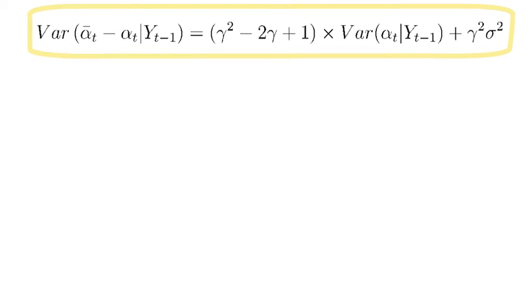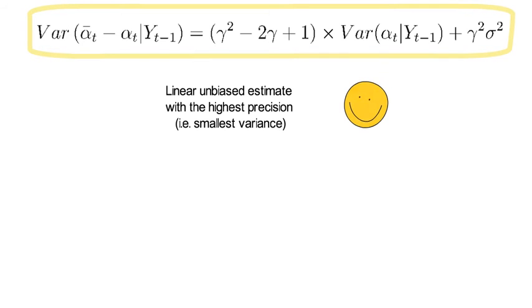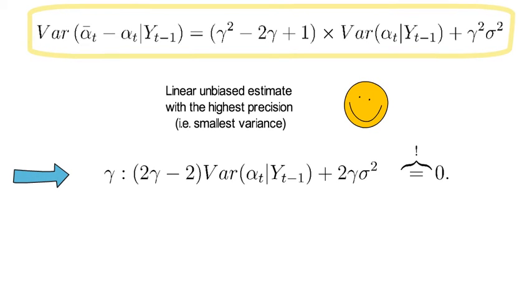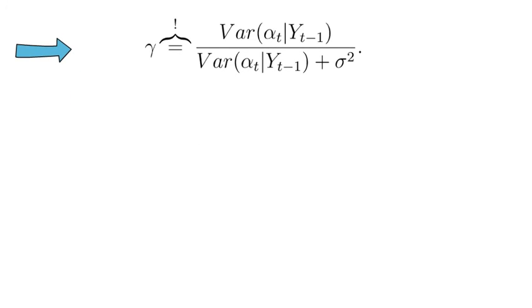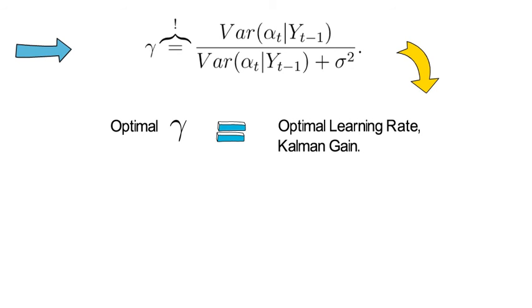We want to find the single linear unbiased estimate that has the highest precision, meaning the smallest variance. To find that, we need to find the gamma that minimizes the last equation. The respective first-order condition reads as follows. Solving for the optimal gamma gives us the following ratio. This reveals that the optimal value for gamma coincides with Kalman's optimal learning rate, also called the Kalman gain.